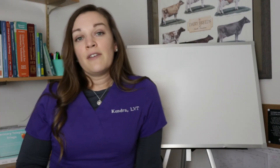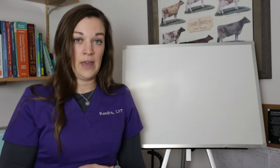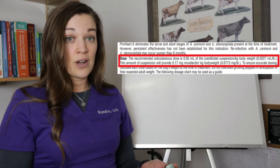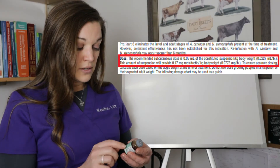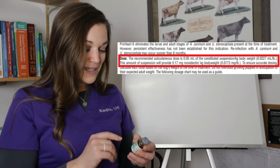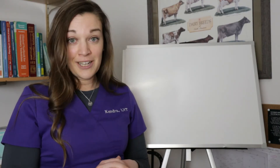Let's get started with our first example. The first drug I have for you is Pro Heart 6. If you live in a heartworm endemic area, you've probably heard of and used this drug — it's an injectable long-acting heartworm preventative. The label tells us this is for subcutaneous injection, so right away we know we're giving this drug sub-Q. It gives a dose of 0.05 mLs per kilogram, or 0.0227 mLs per pound. For those of us in the United States who weigh patients in pounds, we can go right off the label at 0.0227 mLs per pound.